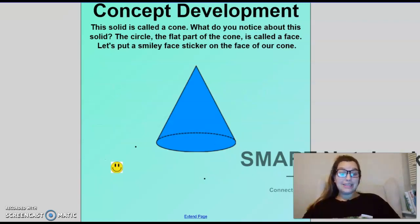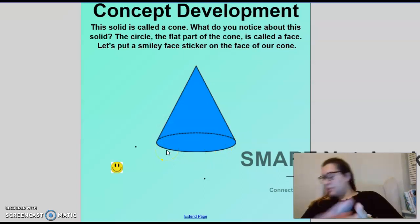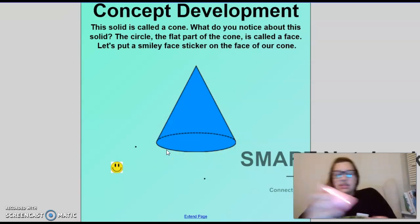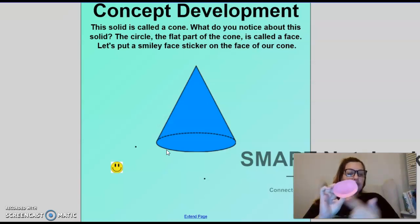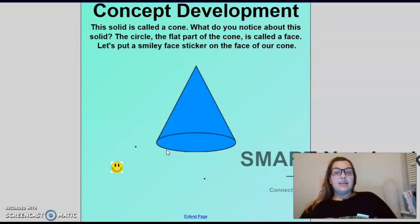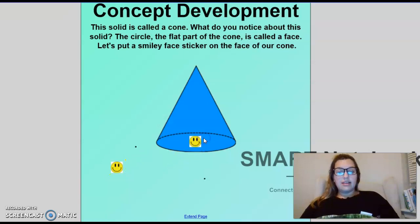Okay. So, we're going to dive right into what our 3D shapes are called and their name. So, this solid, or 3D shape, is called a cone. Can you tell me the two shapes you notice within this cone? Very good. There is a triangle and the bottom is a what? Circle. So, that flat part where the cone sits. See how the cone can sit? That circle is called a face. So, we're going to put a smiley face sticker on the face of our cone. How many faces does a cone have? Just one. Amazing.